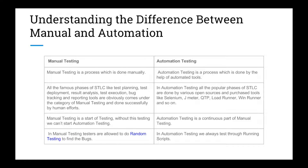Automation testing is a process which is done with the help of automated tools. Generally, what we do is automate whatever test cases we have from the manual part. For example, if there is a login page you want to test and you have maybe six to ten test cases, you write automation code and it executes them again and again.